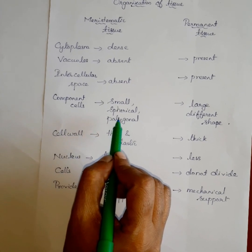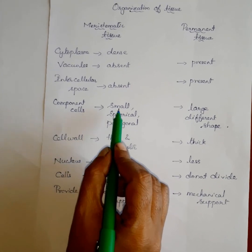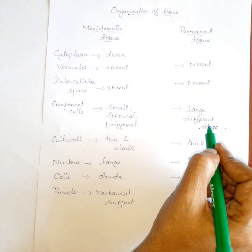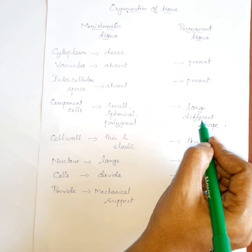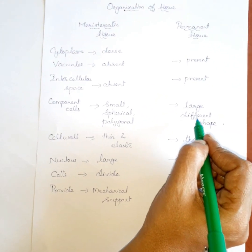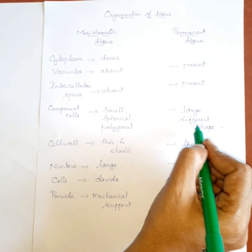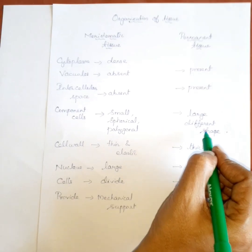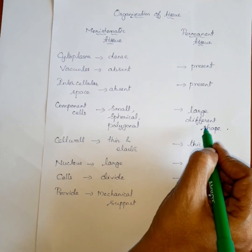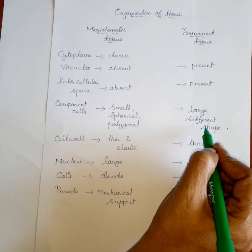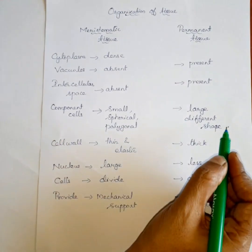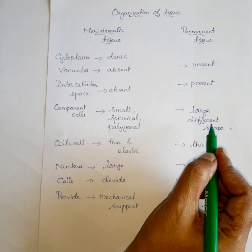In meristematic tissue, cells are living. In permanent tissue, the component cells are large and have different shapes. They are both living and dead cells.